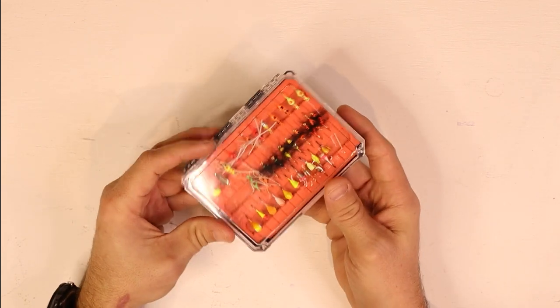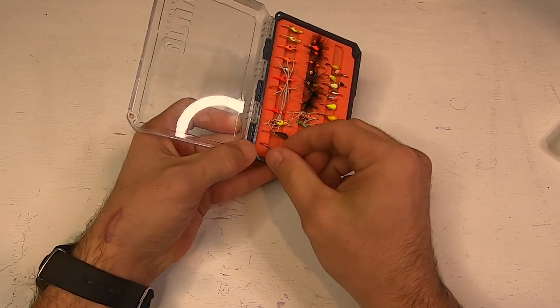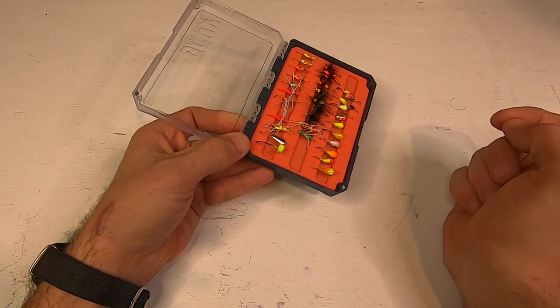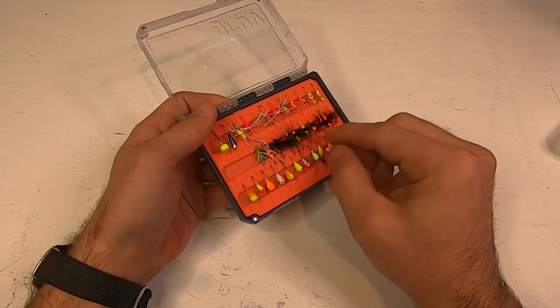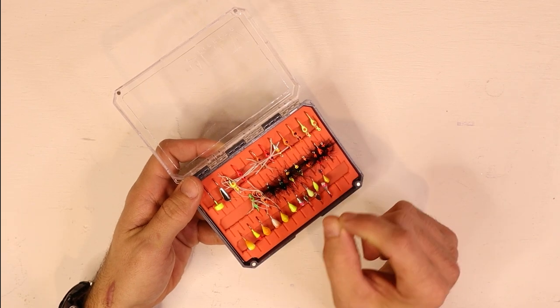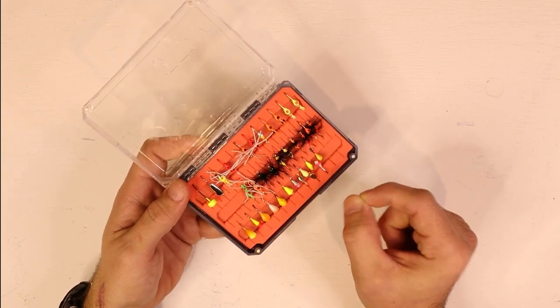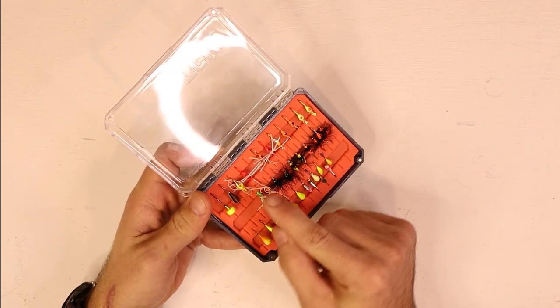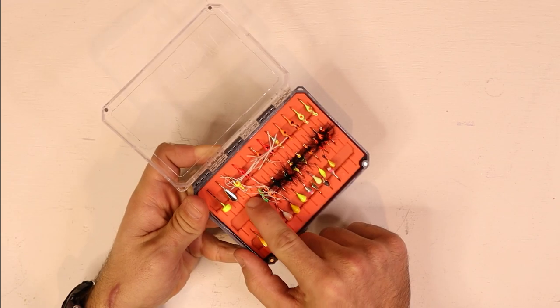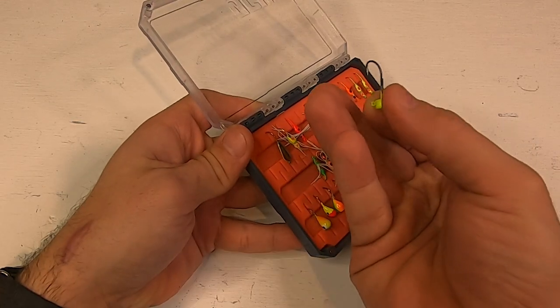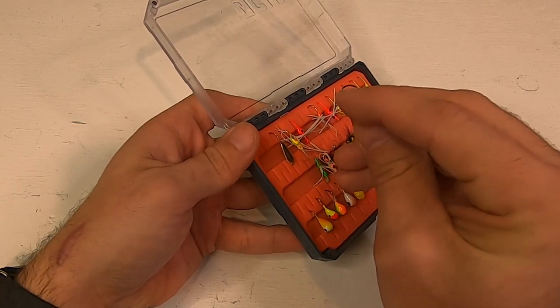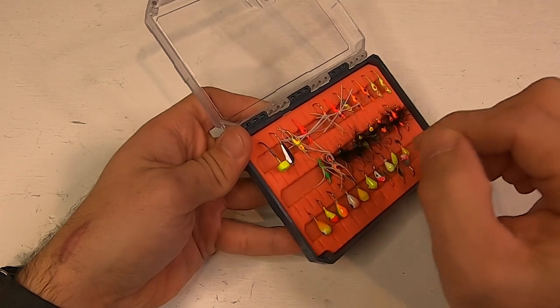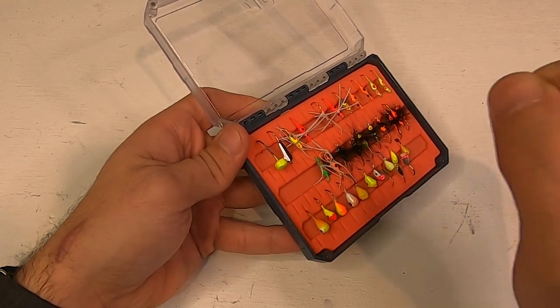Moving on to the cons. First con would be sometimes it can be hard to put a jig into the silicone. Some of these light wire jigs, especially for ice fishing, you have a very small diameter of wire for the hook. You could, and I have, bent some hooks putting them into the silicone. On this mushroom head jig, it's a little bit more of a stout hook compared to most of your ice fishing jigs, so it goes in relatively easy. But when you're working on some of these smaller wire, thin hooks, it can be hard to put it in there.